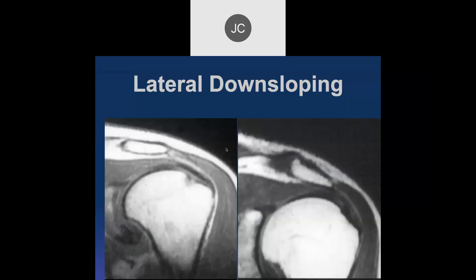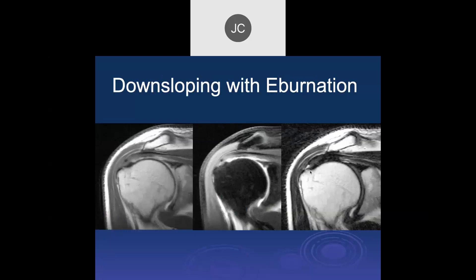Looking at lateral downsloping: here we see a nicely horizontal acromion, and mild lateral downsloping with smooth cortical margins and no abnormal signal in the supraspinatus tendon — not really significant. Another case with mild lateral downsloping shows irregularity of the inferior surface consistent with eburnation and inferior osteophytes, with a small partial bursal-side tear.